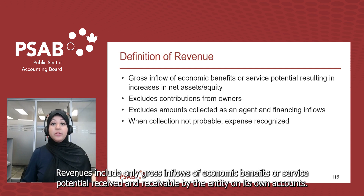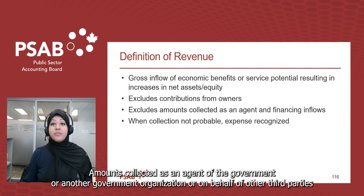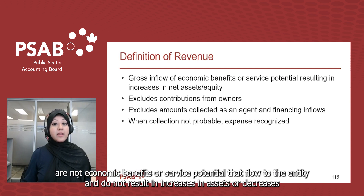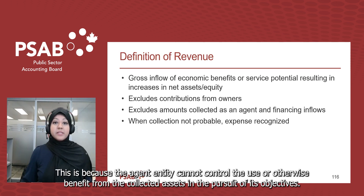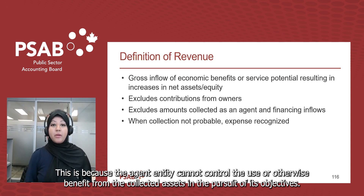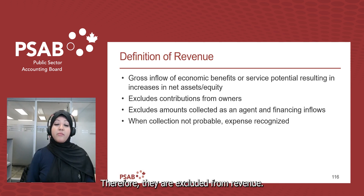Revenues include only gross inflows of economic benefits or service potential received and receivable by the entity on its own accounts. Amounts collected as an agent of the government or another government organization or on behalf of other third parties are not economic benefits or service potential that flow to the entity and do not result in increases in assets or decreases in liabilities. This is because the agent entity cannot control the use or otherwise benefit from the collected assets in the pursuit of its objectives, and therefore they are excluded from revenue.